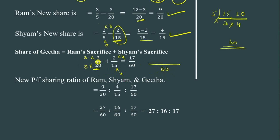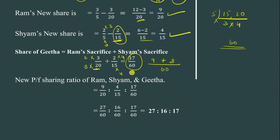With denominator 60: numerator for 3/20 is 3 into 3 equals 9. Plus numerator for 2/15 is 4 into 2 equals 8. Total: 9 plus 8 equals 17. So Gita's share is 17/60.